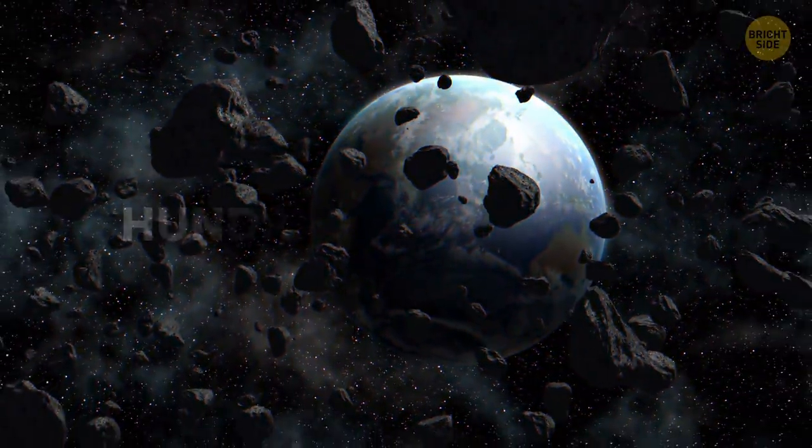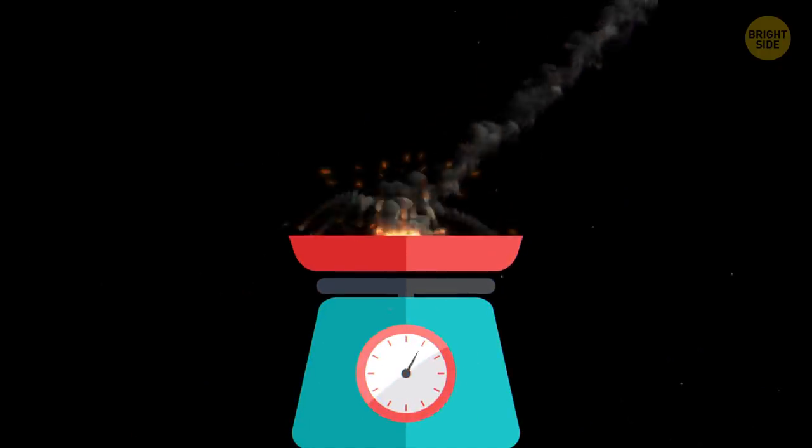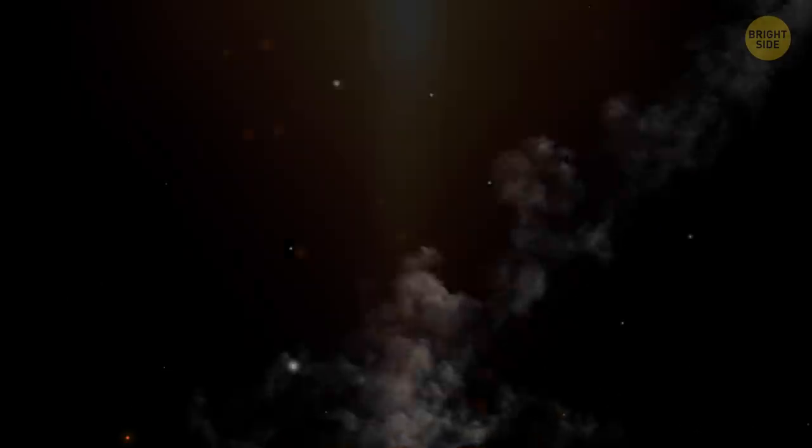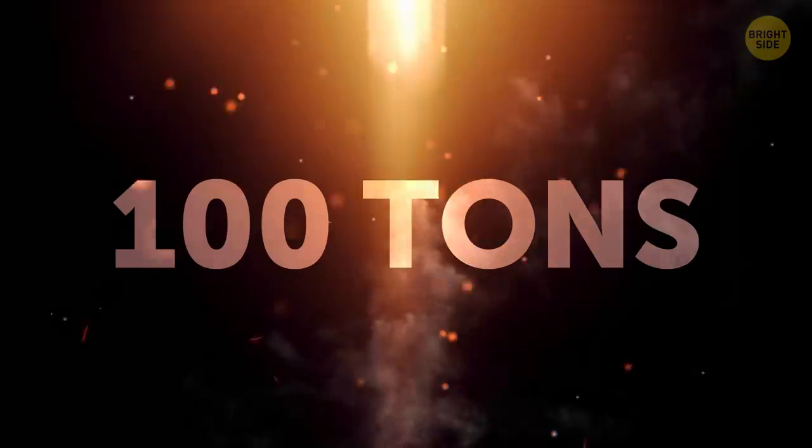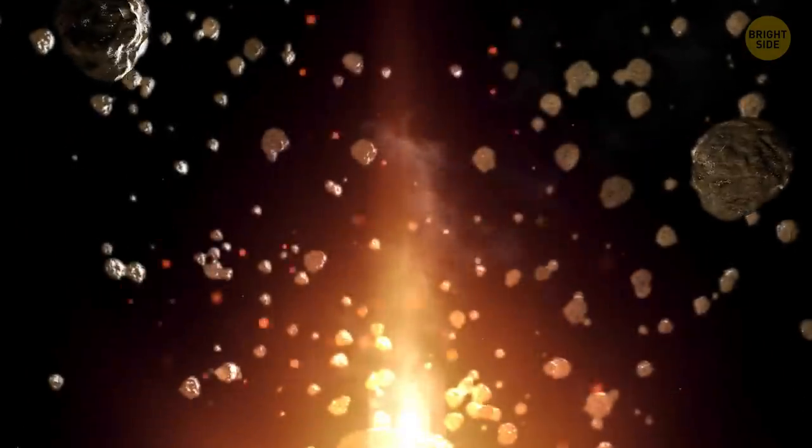Hundreds of millions of meteors appear in the atmosphere daily. Their total weight can be thousands of tons. And about 100 tons of dust particles, which are too small to be visible in the atmosphere, fall down on Earth from space daily. Most of them just burn there without a trace.